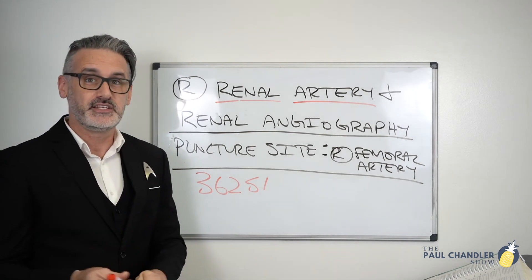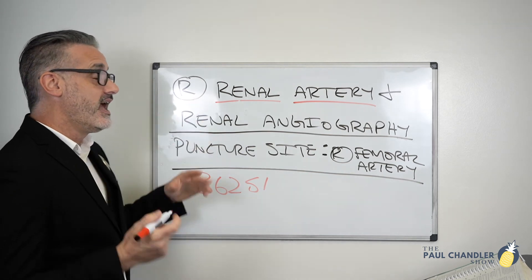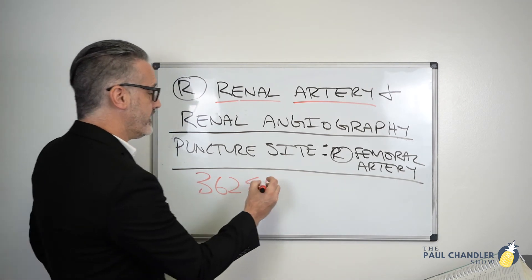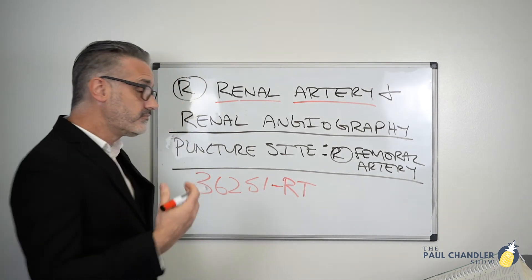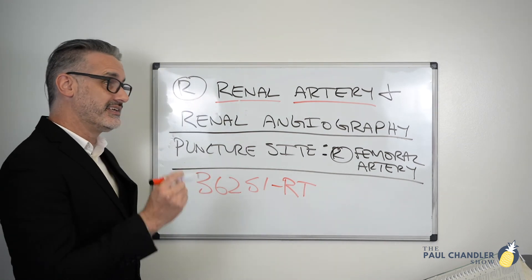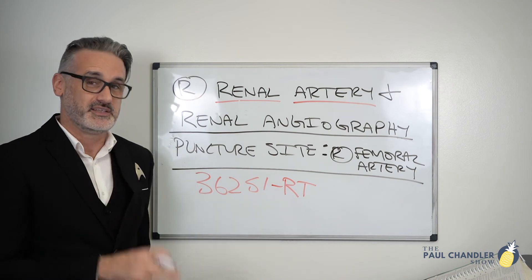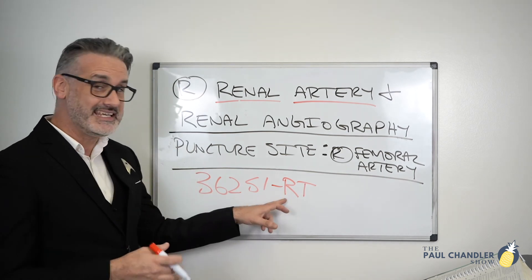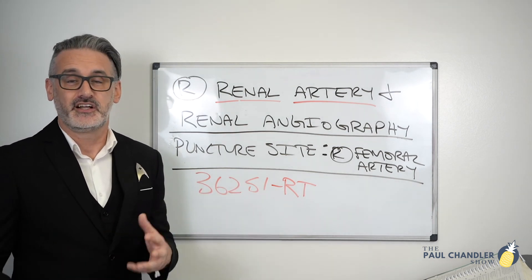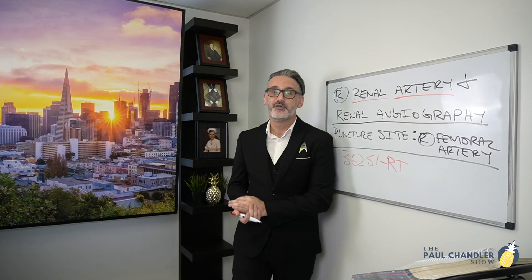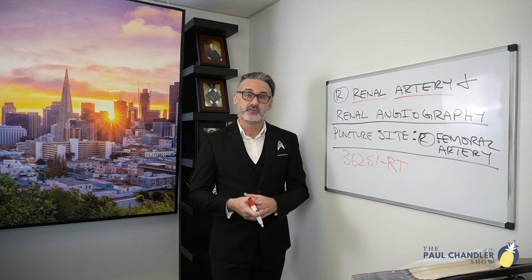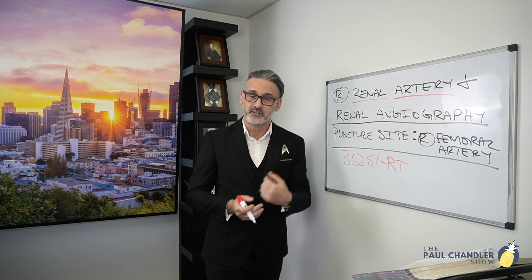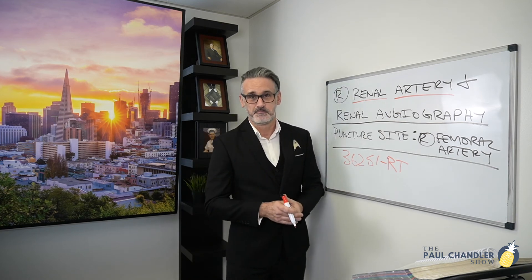The only remaining step is that since 36251 is unilateral — meaning either left or right — I would add modifier RT to clarify that we're doing the right renal artery, not the left. CPT codes don't have laterality built in, so we use modifier LT for left or RT for right to specify the location. So the final answer is code 36251 with modifier RT for the right side.